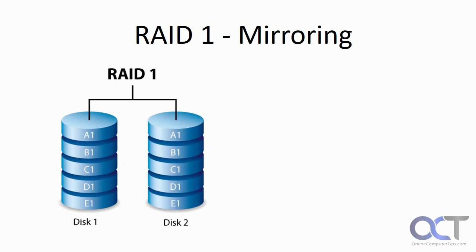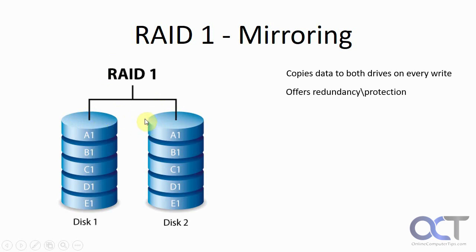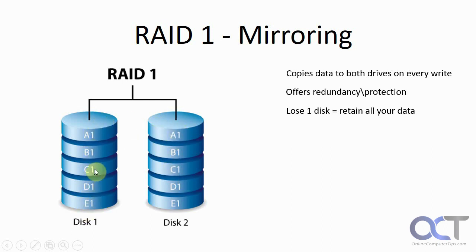Next is RAID 1, which is called mirroring. Every time a write is done, it's written to both drives at the same time. It does offer redundancy and protection of your data. So if you lose one disk, since it's a mirror and an exact copy on each one, you're going to have the exact copy of your data on the other. But if you lose both disks, then you're out of luck. So if you do lose one disk, it's important to put in a new disk so the mirror set will rebuild itself.